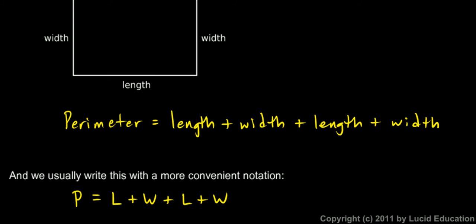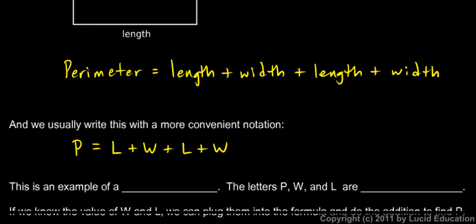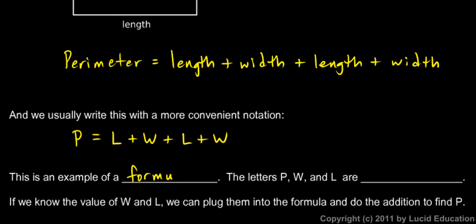They mean exactly the same thing, and this is an example of a formula. The letters P, L, and W are what we call variables. If we know the value of the variables — if we knew the value of W and L — we could put in the number for L in those places and put in the number for W in those places, and then do the addition and find P. That's what a formula allows us to do: a compact and very general way of stating something. This formula states that the perimeter of a rectangle — and this works for any rectangle — is the length plus the width plus the length plus the width. We can use that formula to find the perimeter of any rectangle.